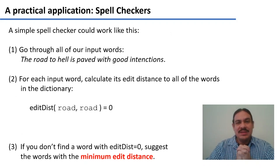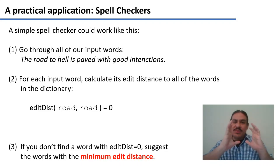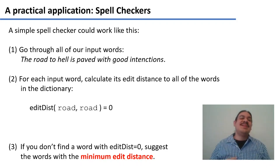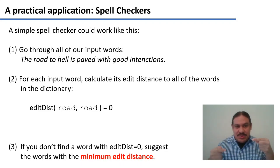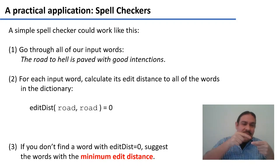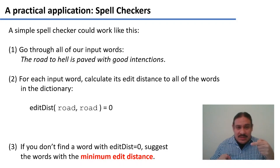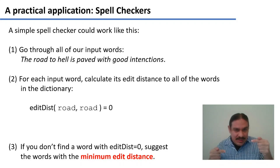So how can we use this for spell checking? We have our dictionary of English and an input document with some words. In this document we find the sentence 'the road to hell is paved with good intentions.' For each word in the input document, we calculate its distance to the words in the dictionary. For example, if we have the input word 'road,' we find 'road' in the dictionary with a distance of zero, because they're identical. If such a match exists, the word is correct and does not need correction.